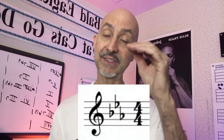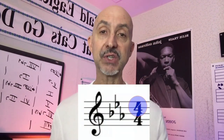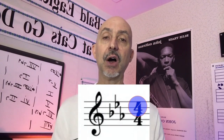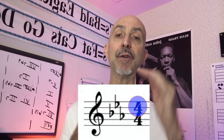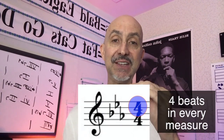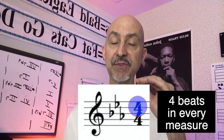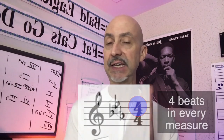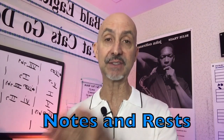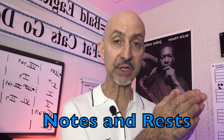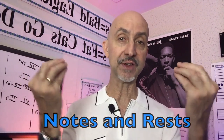Let's take a look at four four. What does the top number tell us? It tells us that there are four beats in every measure. It could be a combination of notes, or a combination of rests and notes, but the total sum is going to be four beats.